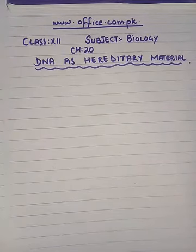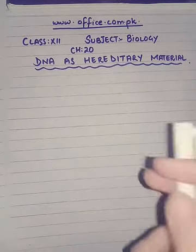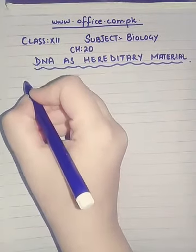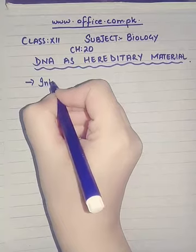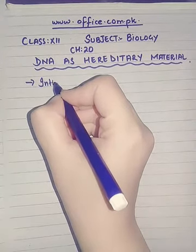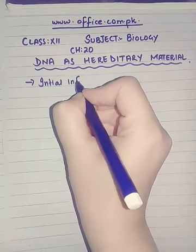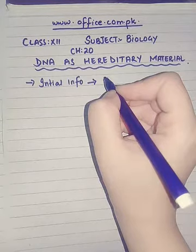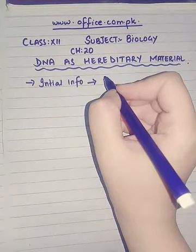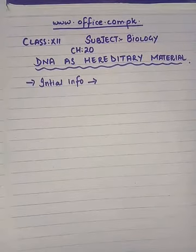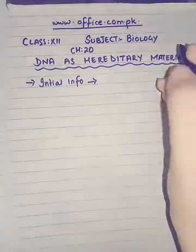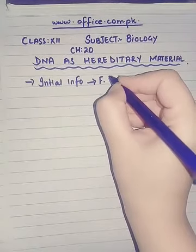The initial evidences or initial information related to DNA as hereditary material was provided by a British microbiologist. Microbiologists are those who study microbiology — the life of microorganisms and their impact on other living organisms. His name was Frederick Griffith.